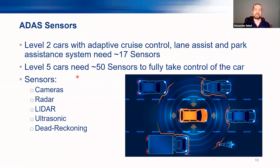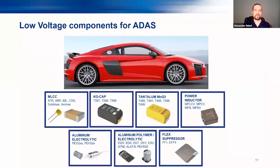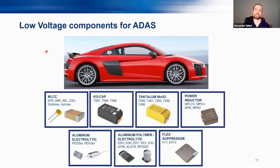This brings us to the main component requirements. Everything is what we call low voltage — so 12V, 48V, or up to 100V. All components must be small because space in the car is limited. The electronics must be as small as possible, so today I'm focusing mainly on low voltage components that are small size and preferred in SMD packaging. We do have high voltage types, but that is not the focus of today's presentation.